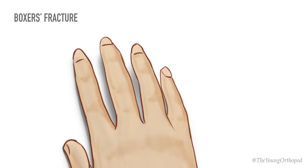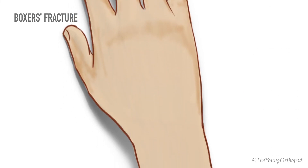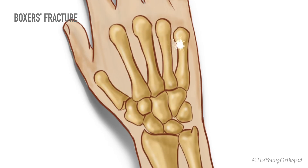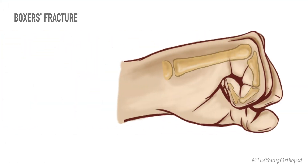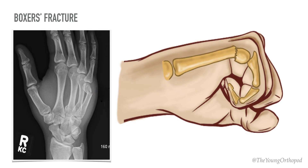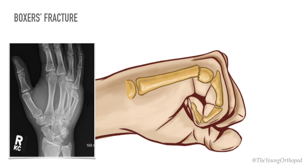A boxer's fracture is a fracture through the neck of the fifth metacarpal, usually occurring in boxers due to the longitudinal force of the boxer's punch. The radiograph of the hand shows an impacted transverse fracture with volar angulation of the distal fragment.